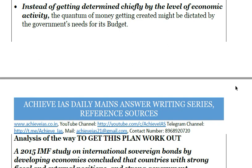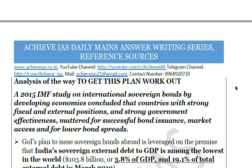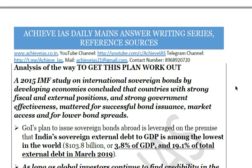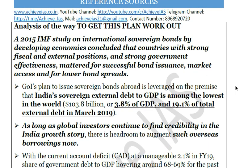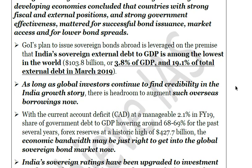To make this plan work out, we must also analyze supporting conditions. According to a 2015 IMF study on international sovereign bonds by developing economies, countries with strong fiscal and external positions and strong government effectiveness had successful bond issuance, better market access, and lower bond spreads. India's sovereign external debt-to-GDP ratio is 3.8%, and external debt is 19.1% of total external debt as of March 2019. Global investors are finding India's growth story credible, providing a headroom to augment overseas borrowings.